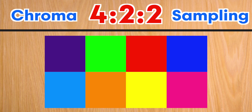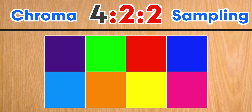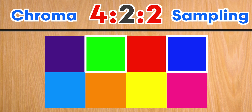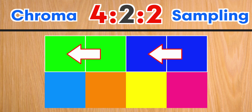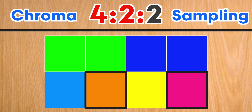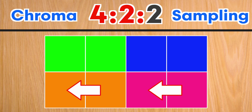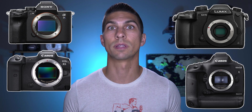When we move on to 4:2:2, the 4 tells us that the brightness information of all pixels is being recorded. The first 2 tells us that the color information of only 2 of the pixels in the top row is now being recorded, and those colors are being copied to the adjacent pixels. The second 2 tells us that the same thing is happening on the bottom row. In this type of chroma sampling, your camera is only recording 50% of the original color it sees. This really reduces file sizes compared to 4:4:4, and this recording option is becoming much more common among higher-end DSLRs and mirrorless cameras.